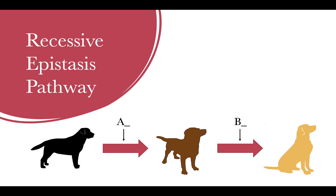To demonstrate this concept, I have created a fictional pathway using the Labrador dog breed. In this breed, there are three main colors: black, chocolate, and yellow. For this single recessive scenario, black will be the first step in the epistatic pathway. For a dog to be black, it must have a homozygous recessive allele for the A locus. It doesn't matter what the B locus is doing, because without the A locus showing a dominant allele, the dog won't have the ability to show the chocolate or yellow phenotype.